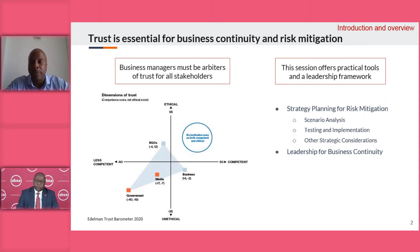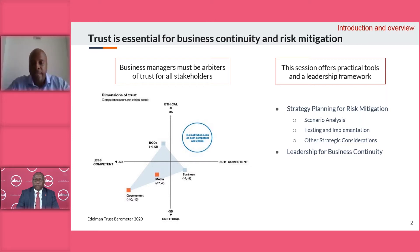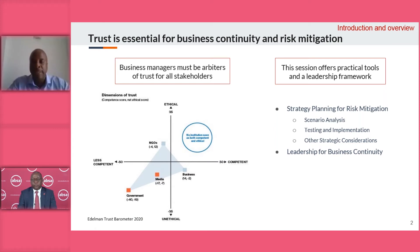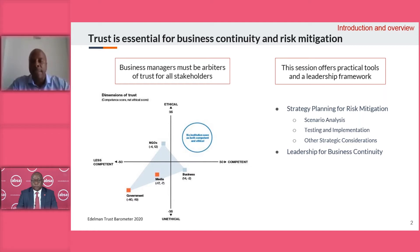In the second half of this session, we'll look at strategic planning for risk mitigation. We will first start with scenario analysis and then testing and implementation. There are some other strategic considerations for business continuity, and then we want to return to the topic of business leadership for continuity.